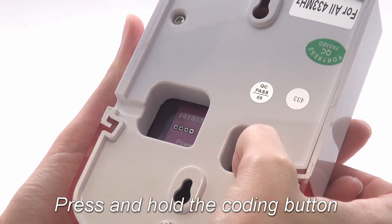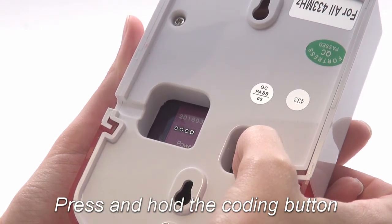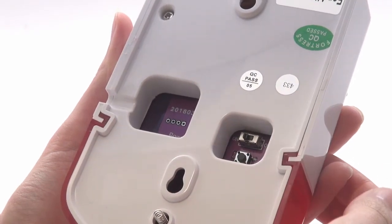Next, press and hold the coding button until the siren beeps. The light should still be lit.